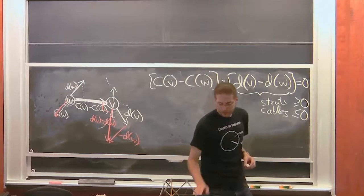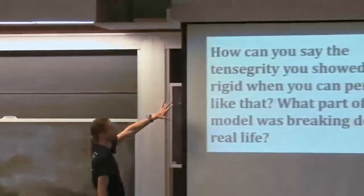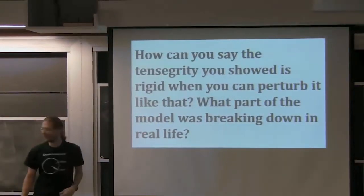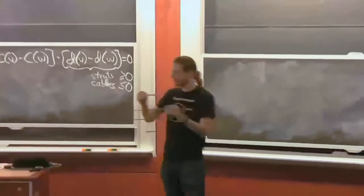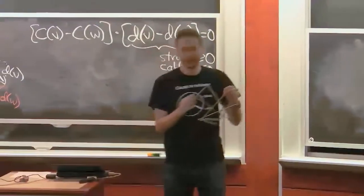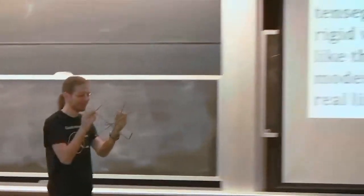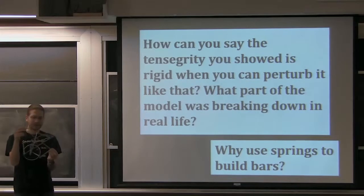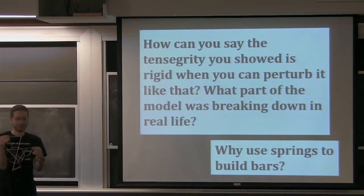Okay. Next question was a couple of questions here. One is, how can you say the tensegrity you showed is rigid? Because you can flex it. This doesn't look very rigid, this guy here. It looks quite flexible. And then there was another question by someone else saying, why did you use springs to represent bars? And these are sort of the same question. This is flexible because the springs are flexible. The idea with the springs, I mean, I'm just guessing why this model was made this way.